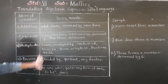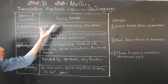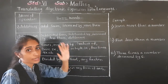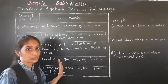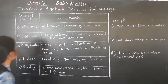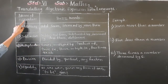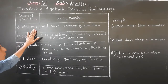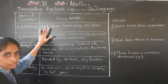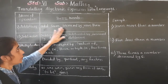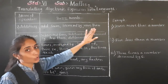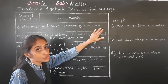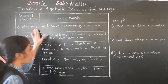We have to translate algebraic expressions into language, or if language is given, translate into algebraic expressions. These are the buzzwords that make it easy. For addition, the words we use are: add, increase by, more than.